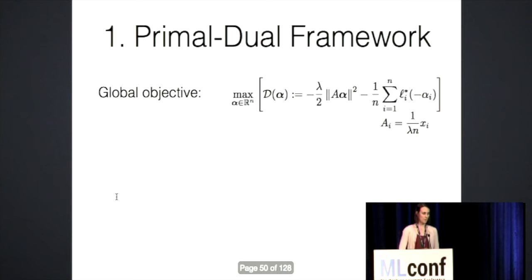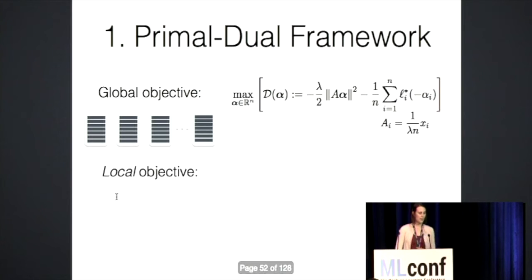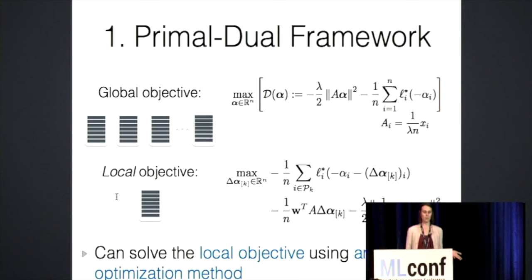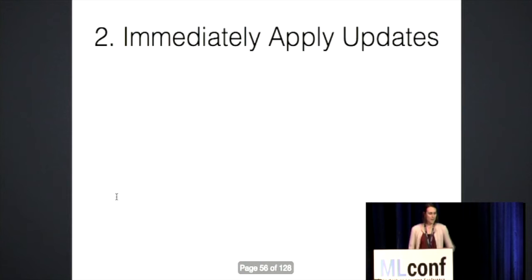So what exactly do I mean by that? Well, looking at this dual objective, this objective is global, and that it takes into account data from all of the machines. What we've done in CoCoA is we've instead defined this local objective, which just takes into account data from a single machine. And basically all we've done here is square out that regularizer term, and now we're indexing over dual variables on a single machine for the losses. So now that we have this local objective, the reason that we're calling this a framework is that we allow you to solve this local objective using any internal optimization method. So in this way, you can take something that works well, that you've tuned some code that you've written on a single machine, and directly apply it into the distributed environment.